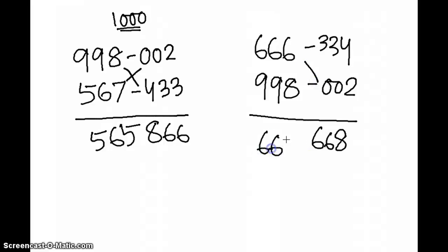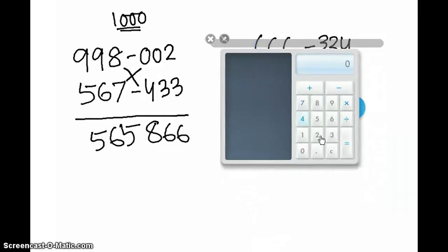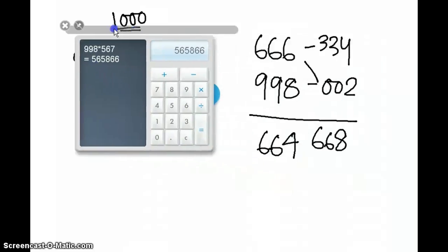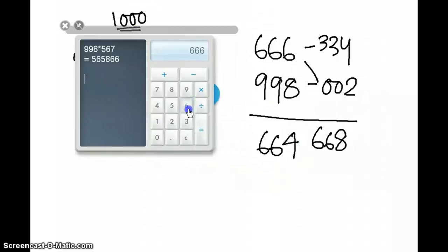Let's take the calculator and check out both the sums. So first thing that I'm going to check is 998 into 567. 565866, absolutely correct. And the next one is 666 into 998 that gives me 664668.